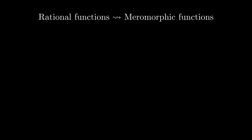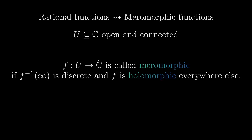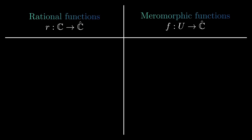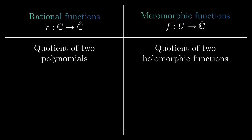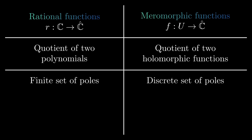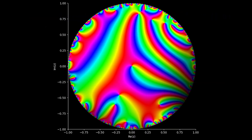Rational functions can be generalized to meromorphic functions. A function is called meromorphic if it has a discrete set of poles and is holomorphic everywhere else. Meromorphic functions behave a lot like rational functions: a rational function is always a quotient of two polynomials, while a meromorphic function is always a quotient of two holomorphic functions. For rational functions, there is always a finite set of poles, while for meromorphic functions, the set of poles is discrete. Just as with holomorphic functions, the poles can have limit points on the boundary of the domain.